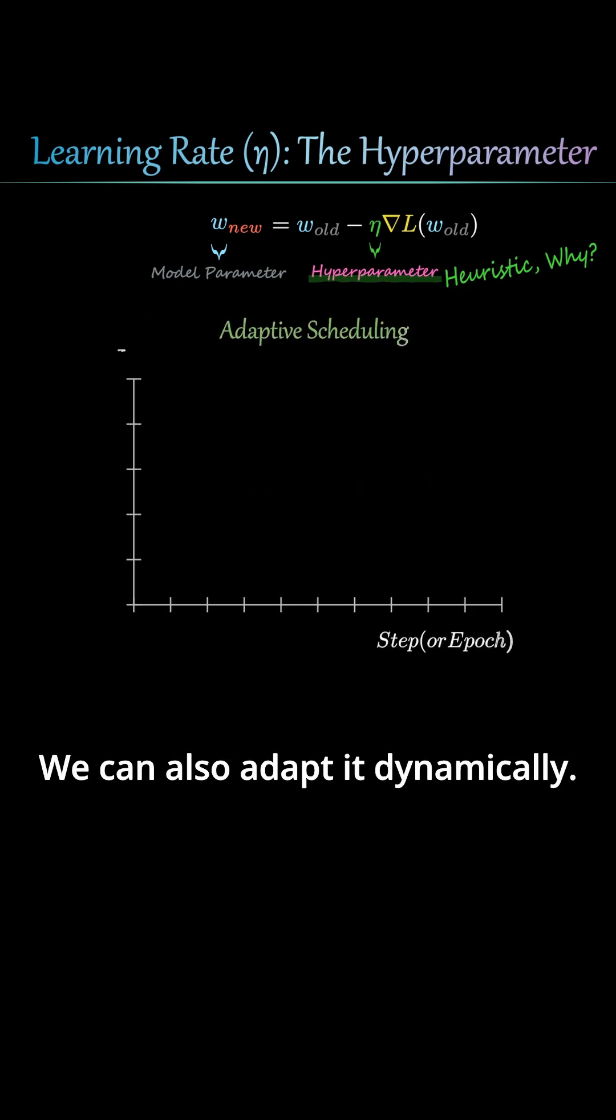We can also adapt it dynamically. If the loss decreases well, we increase the learning rate slightly. If it shows signs of divergence, we decrease it.